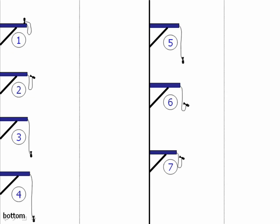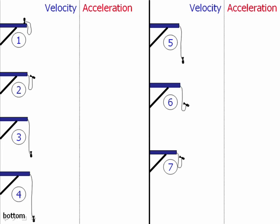Let's look at these seven motions of your bungee jump. At each of those motions, let's find the direction of the velocity vector and the acceleration vector. We're not going to worry about the magnitude of those vectors, just which direction they point. And if one of those vectors is zero, we'll represent that with a dot. Think about your answers and fill in this table.